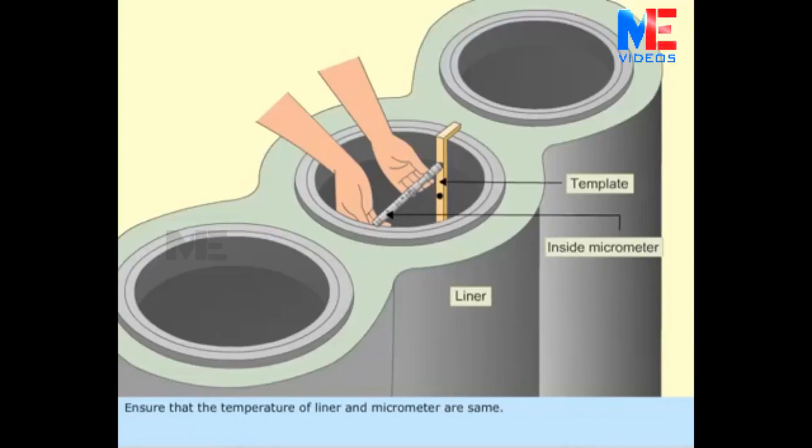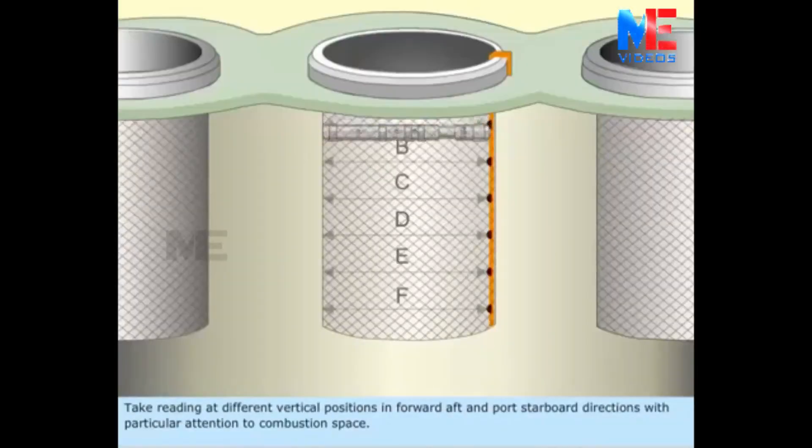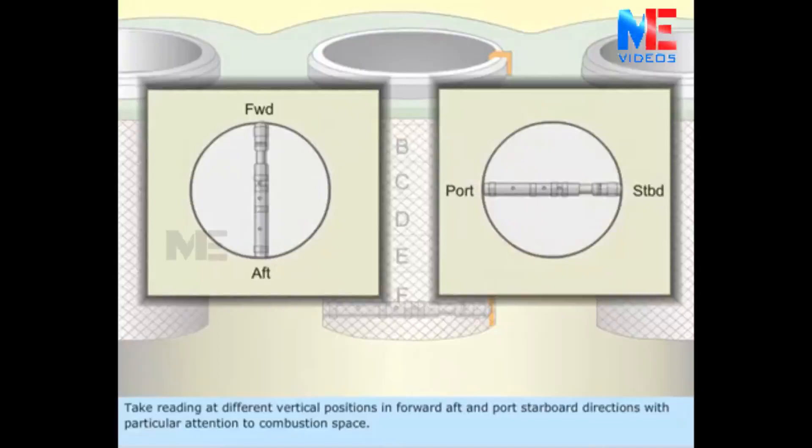Ensure that the temperature of liner and micrometer are same. Take reading at different vertical positions in forward-aft and port-starboard directions with particular attention to combustion space.